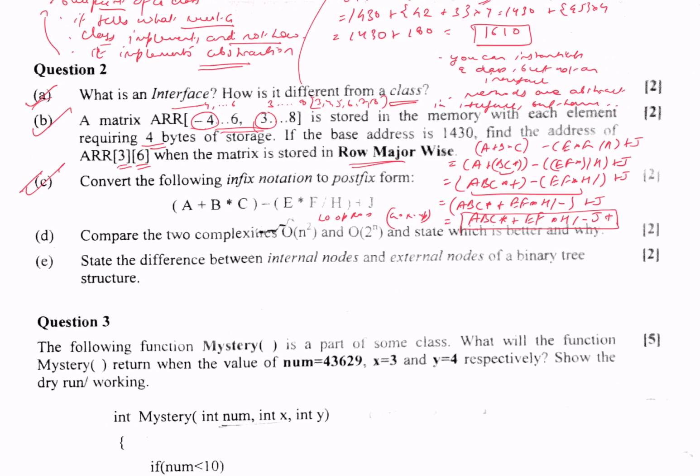Moving on to part D: compare the two complexities O(n²) and O(2ⁿ), state which is better. So comparing, you can take certain values of n. If you take the value of n as maybe 10, so if n = 10, 2ⁿ and n². 2ⁿ will be 1024 and n² will be 100.